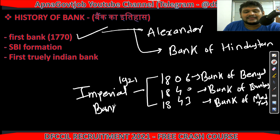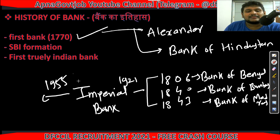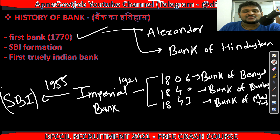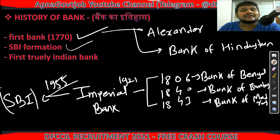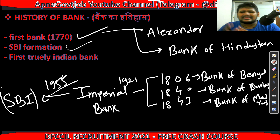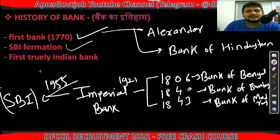In 1955, the Imperial Bank's name was changed and it became State Bank of India — our famous SBI. So this is how SBI was formed. SBI is the biggest commercial bank in India. Commercial means a bank that provides basic facilities like savings account, deposit facility, loan facility, and similar things.